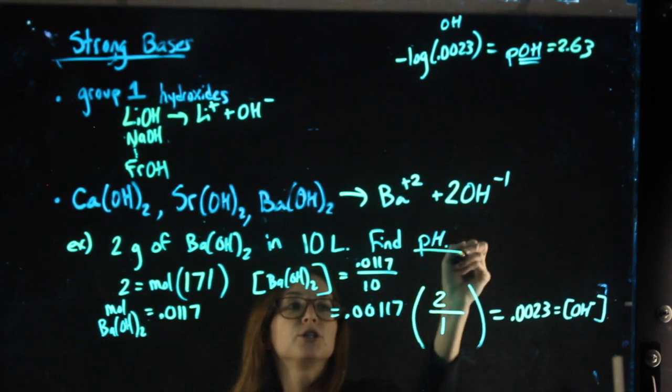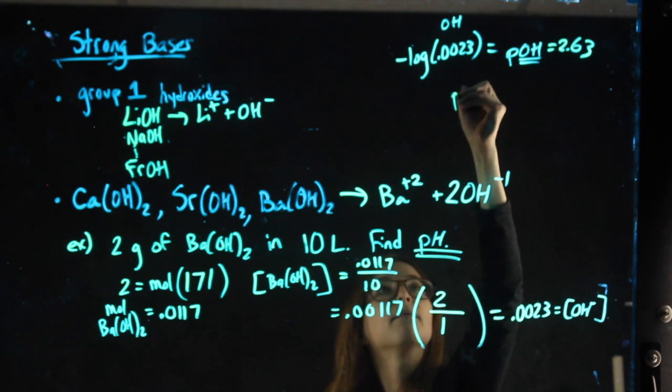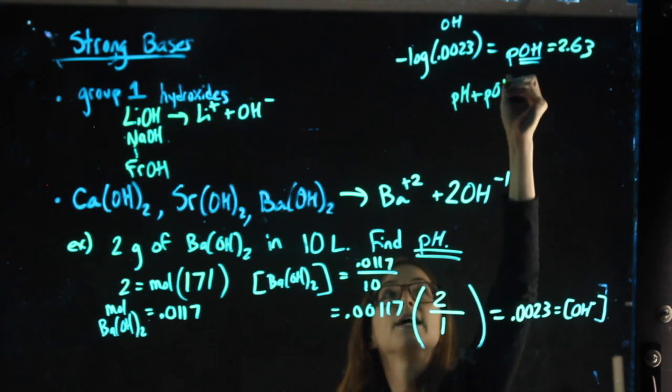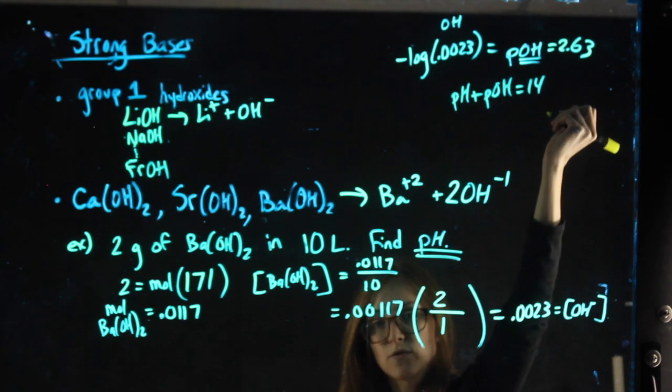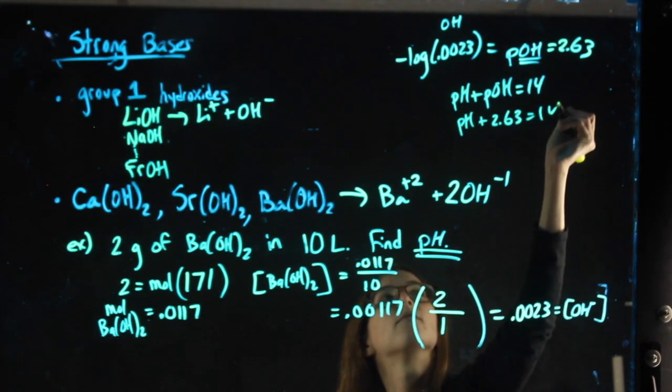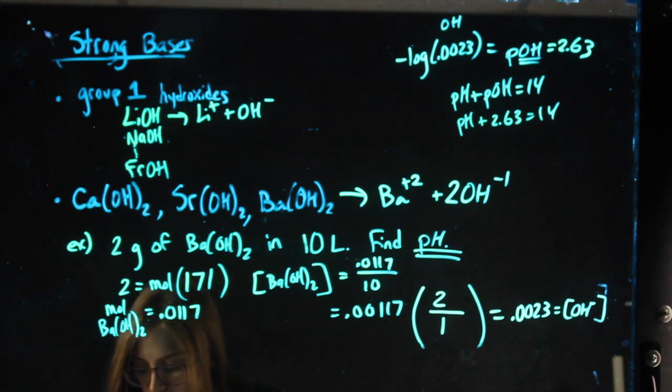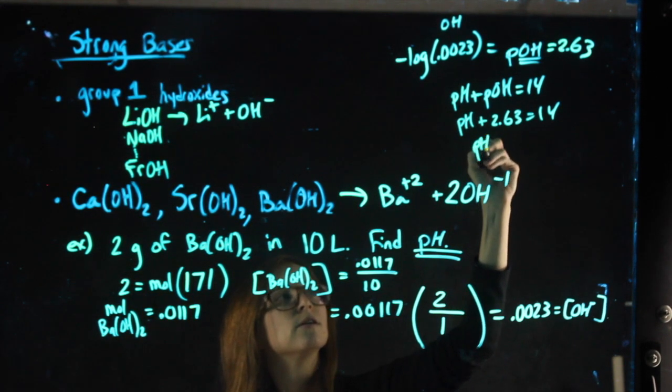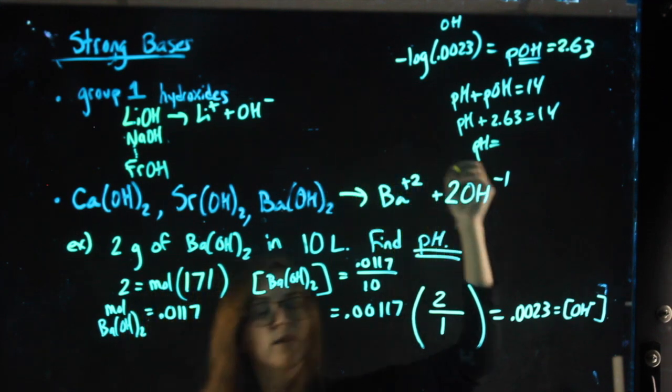I don't want pOH, I want pH, so then I like to use the formula pH plus pOH equals 14. Essentially, I'm doing 14 minus that 2.63, and I find the pH to be 11.37.